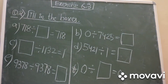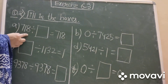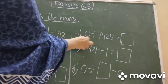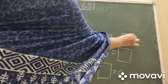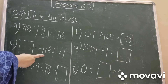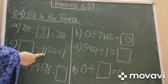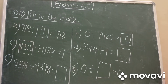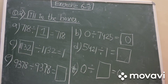Now come to question number two: fill in the boxes. Part A: 718 divided by blank equals 718 — you divide by one, so the answer is one. Part B: zero divided by 7425 equals blank — zero divided by any number is zero. Part C: blank divided by 1132 equals one — you have to divide the same number by itself, so you fill in 1132.